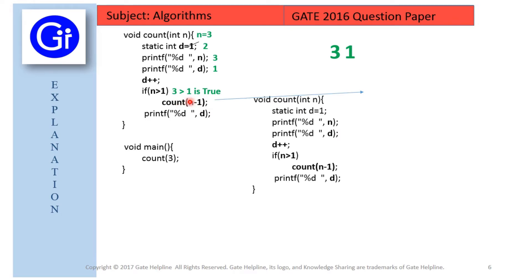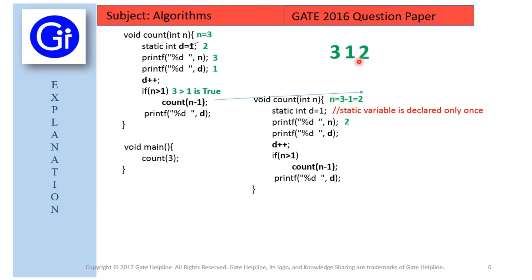This becomes a new call to count with n = 3 - 1 = 2. The static int d = 1 statement is ignored since static variables are declared only once. We then print n, which is 2, to the output. Next we print d, whose updated value is 2, so we print 2 to the output as well.